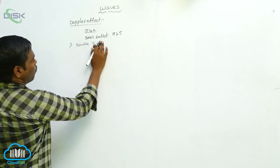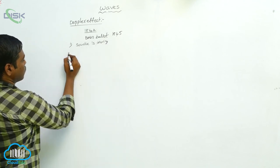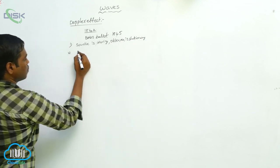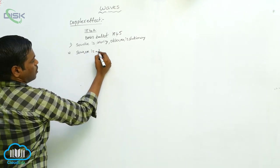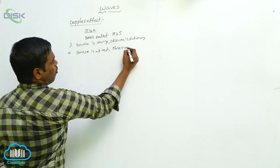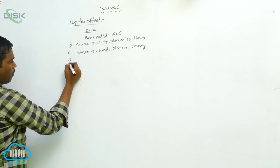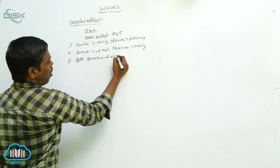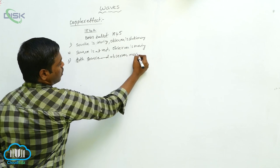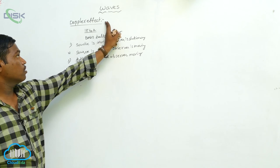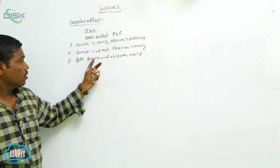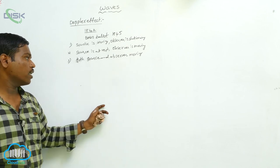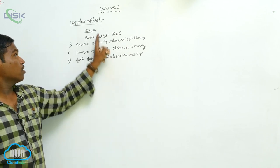To study the Doppler effect, there are three situations: first, the source is moving and the observer is stationary; second, the source is at rest and the observer is moving; third, both the source and observer are moving. The Doppler effect simply means when the source of sound is approaching or moving away from the observer, there is an increasing or decreasing of the intensity of sound.